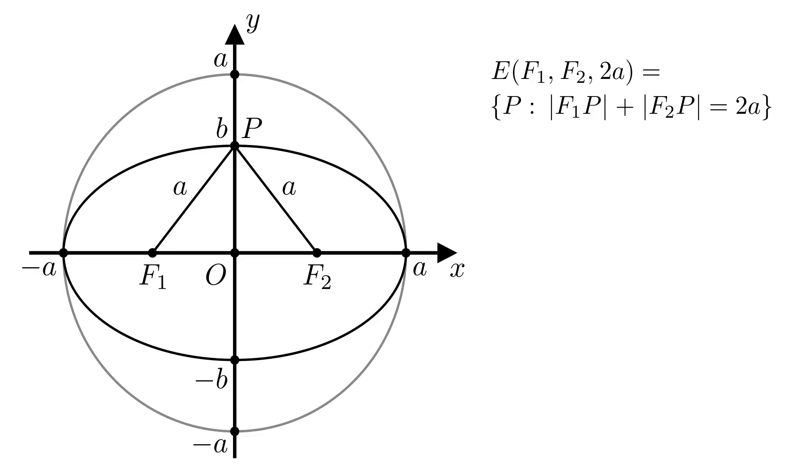From the Pythagorean theorem, we can find |OF2|, and it's equal to the square root of a squared minus b squared. Now we can put focal points at right places. And |OF1| is also equal to the square root of a squared minus b squared.